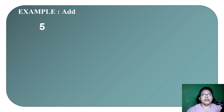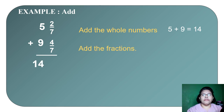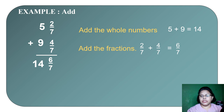Example: add 5 and 2 sevenths plus 9 and 4 sevenths. Arrange them vertically. First, add the whole numbers: 5 plus 9 equals 14. Then add the fractions: 2 sevenths plus 4 sevenths equals 6 sevenths. So the final answer is 14 and 6 sevenths. This is already in lowest term, since 6 and 7 share no common factor other than 1.